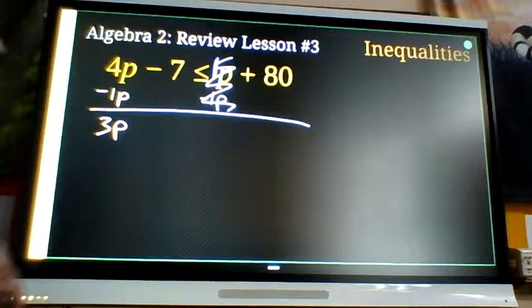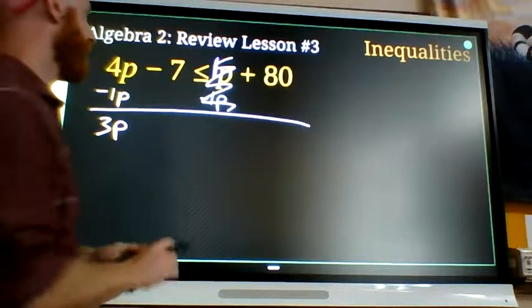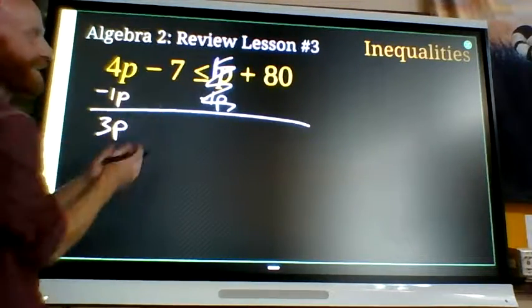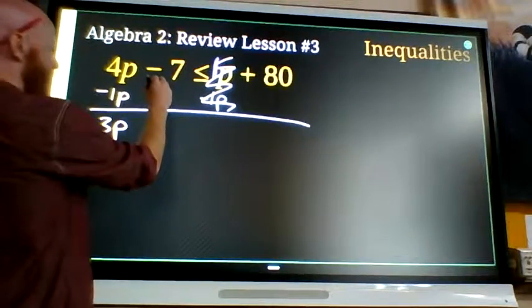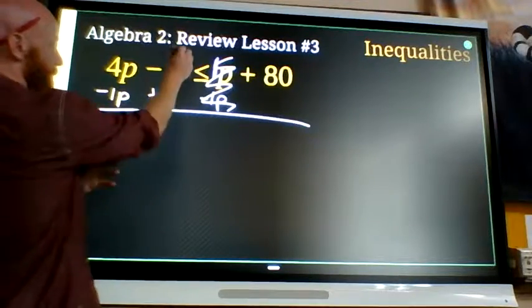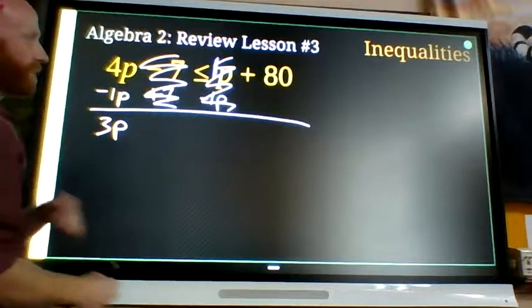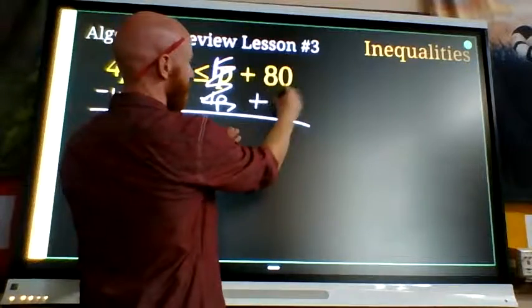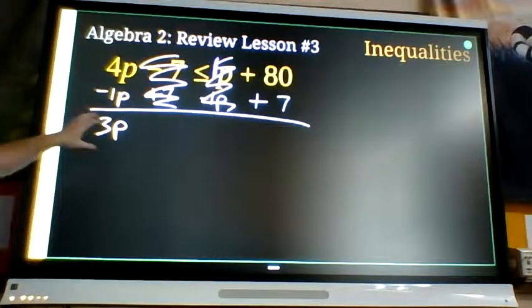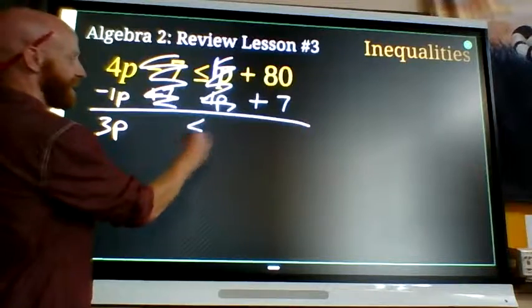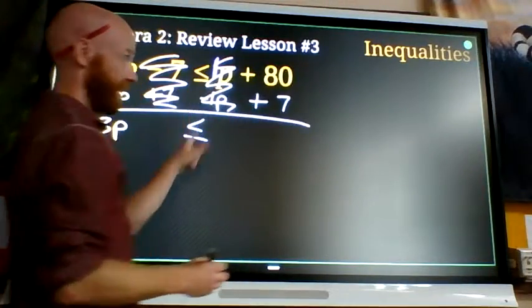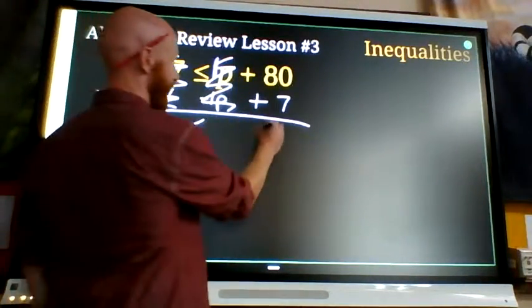Then also, simultaneously, I'm going to get rid of the minus 7 over here by adding 7. Minus 7 plus 7 will be 0 and I will add 7 over here to keep the equation balanced. So we have 3p is less than or equal to, keep that symbol, 87.